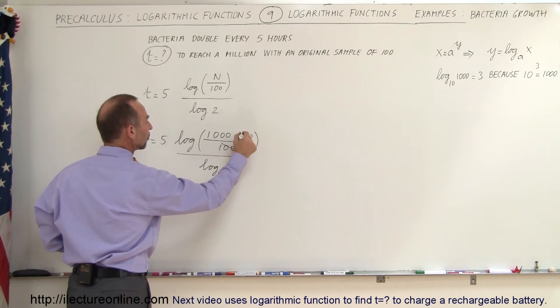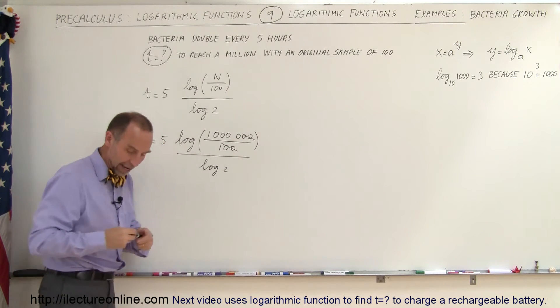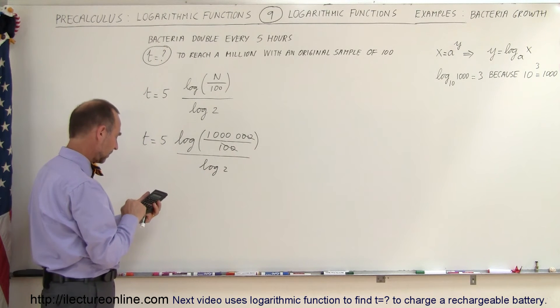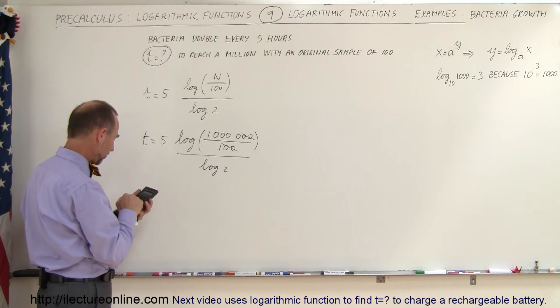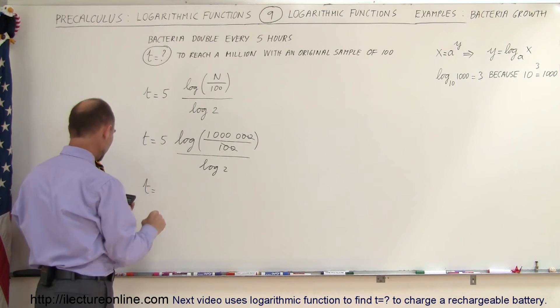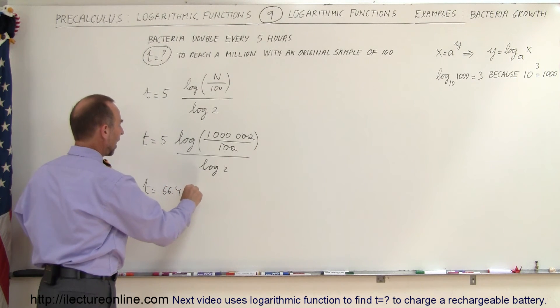And of course we get rid of those two zeros, and the equation can be calculated by taking the log of 10,000, take the log of that and then divide that by the log of 2, and then multiply it times 5. It looks like you will have reached 1 million bacteria after 66.4 hours.